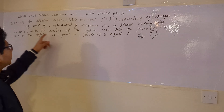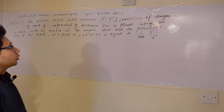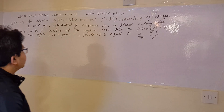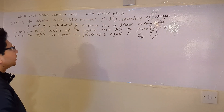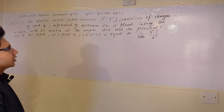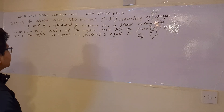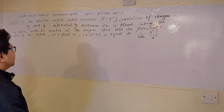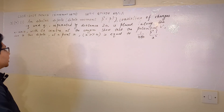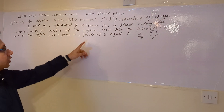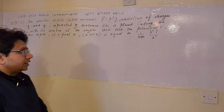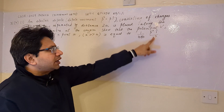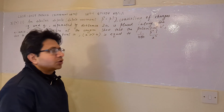The question is: an electric dipole with dipole moment p consisting of charges minus q and q, separated by distance 2a, is placed along the x-axis with its center at the origin. Show that the potential V due to this dipole at a point x, where x is very much greater than a, is equal to 1 upon 4 pi epsilon naught times p cap upon x squared.